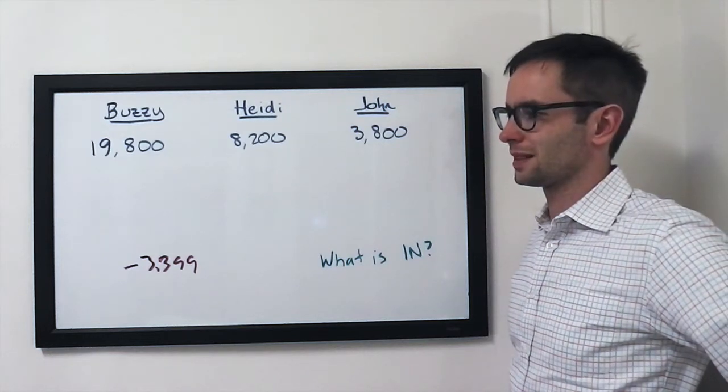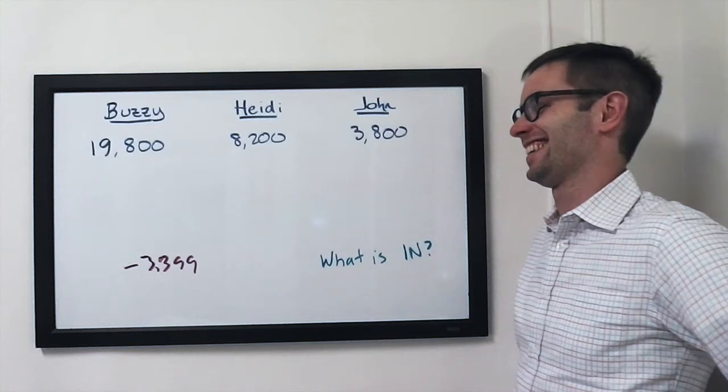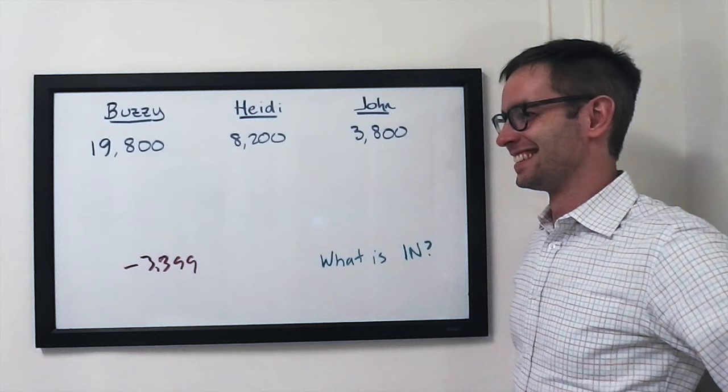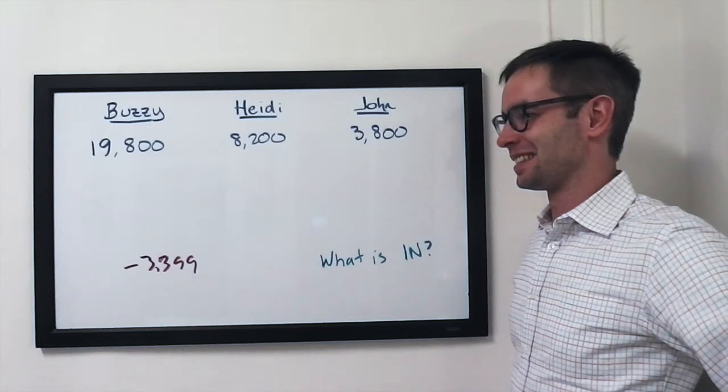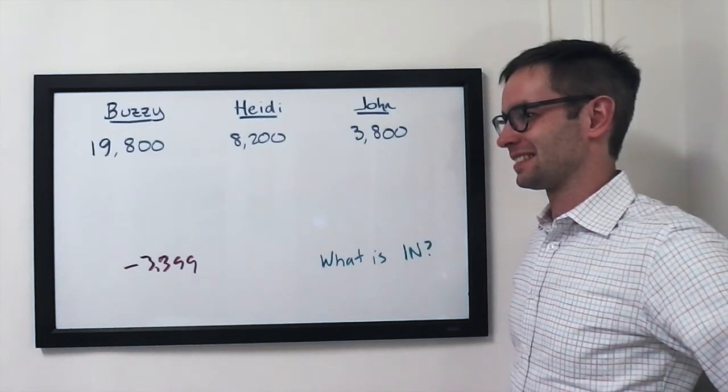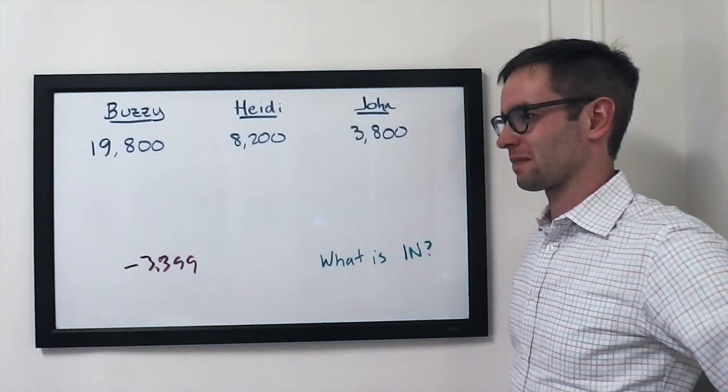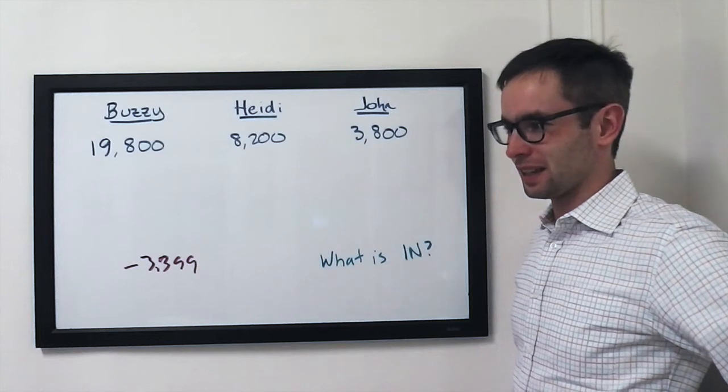As we come to Buzzy Cohen, he had 19,800, and what is... The correct response is Indiana. I thought that would cause problems for you guys. That was a tough clue. I got lucky with that. Our champ, he picks up 19,800.